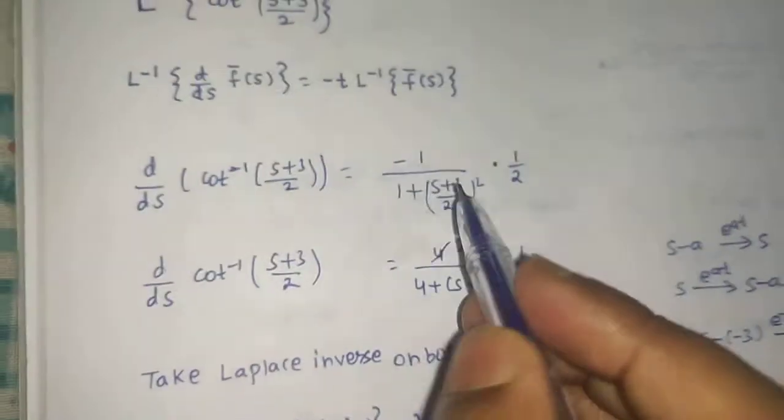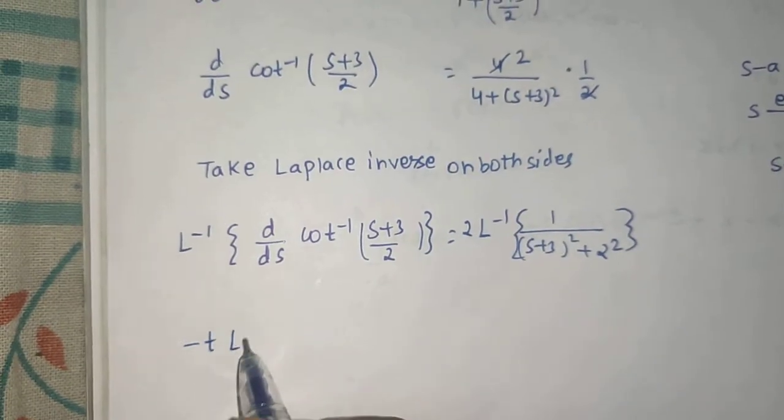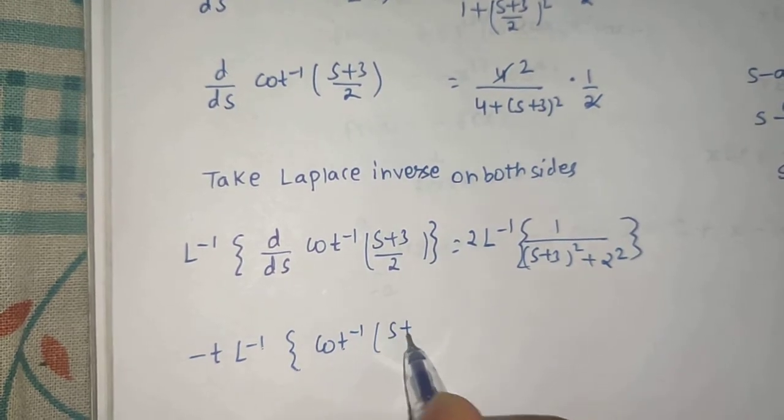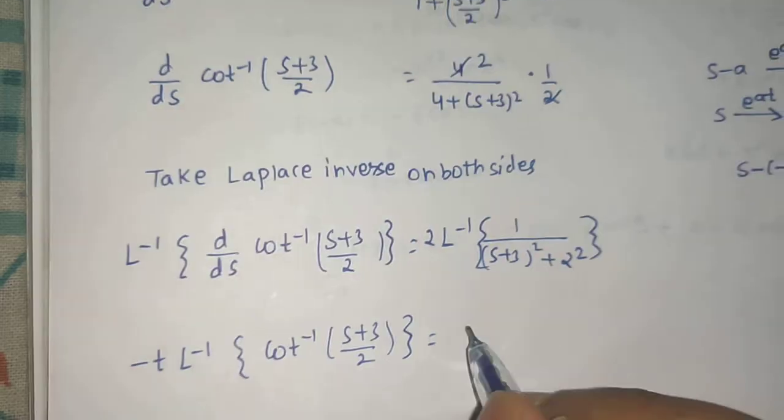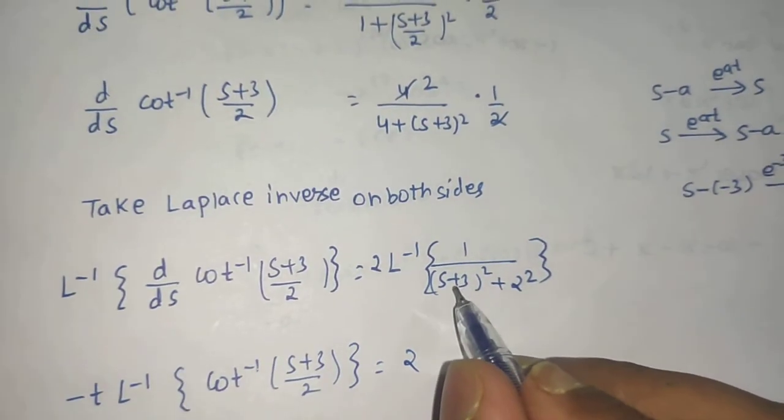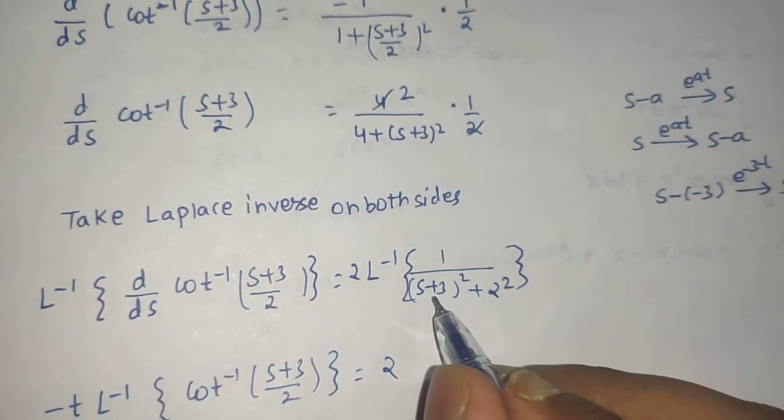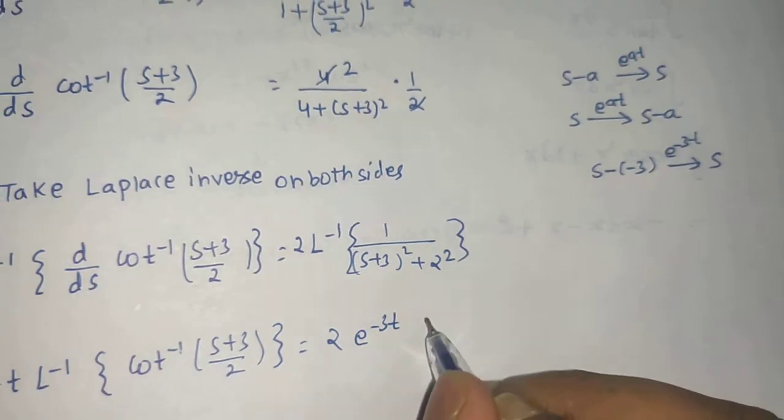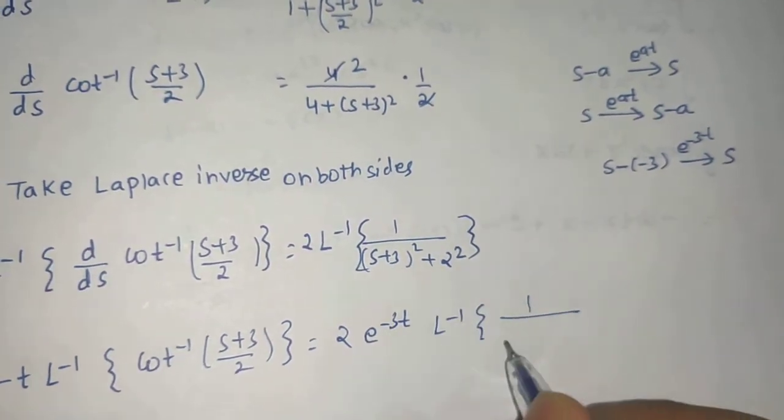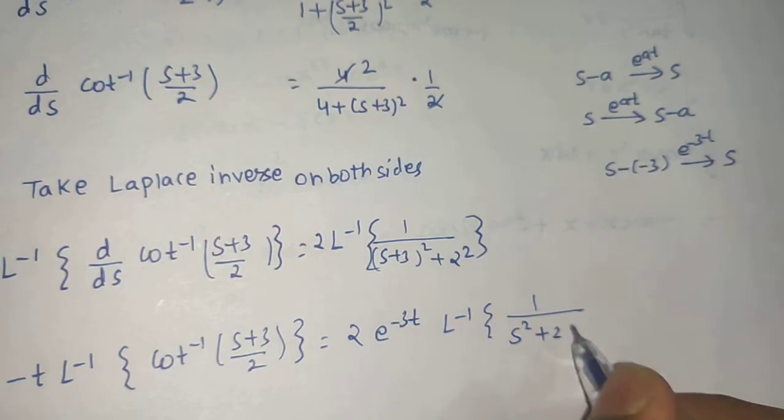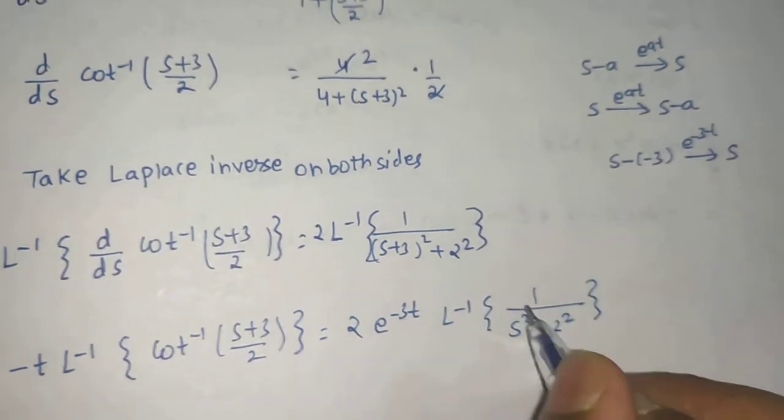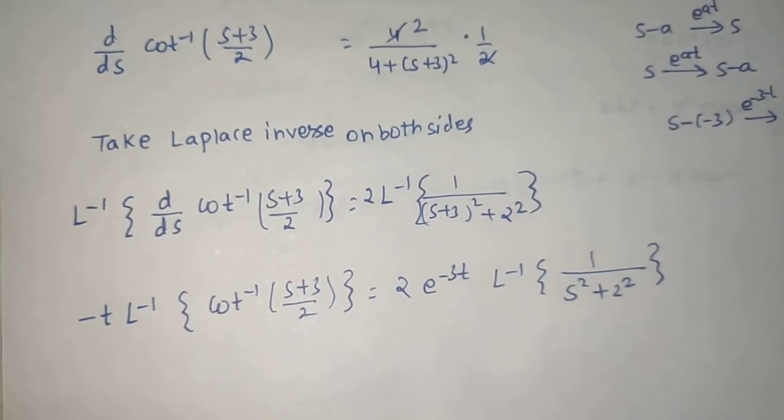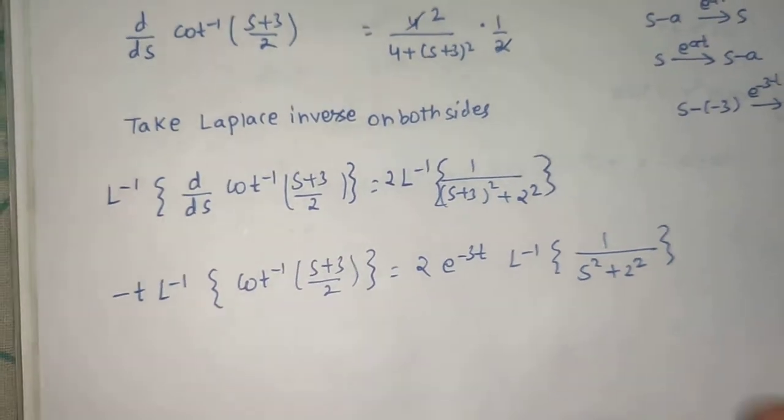Using the derivative formula, we get -T times the Laplace inverse. Moving from S+3 to S, we multiply by e^(-3t). The Laplace inverse of 1/(S^2 + 2^2) is sin(2t)/2, using the standard formula L^(-1){1/(S^2 + A^2)} = sin(At)/A.